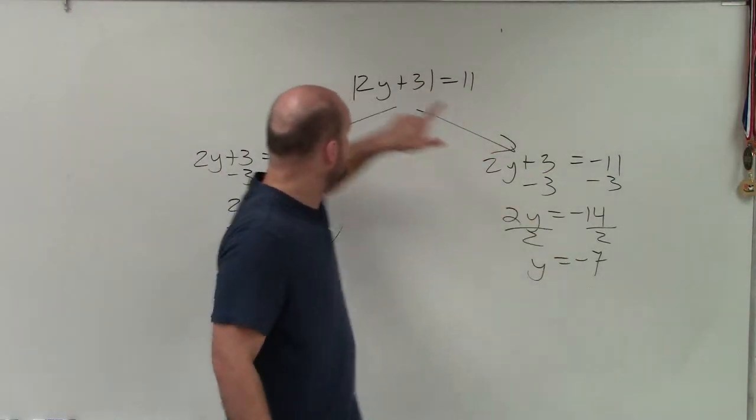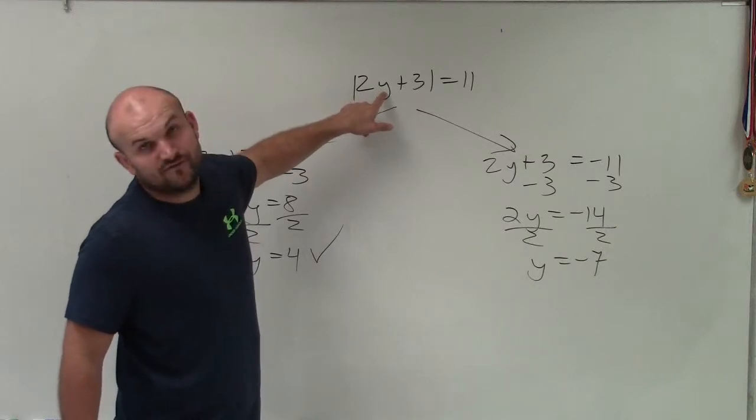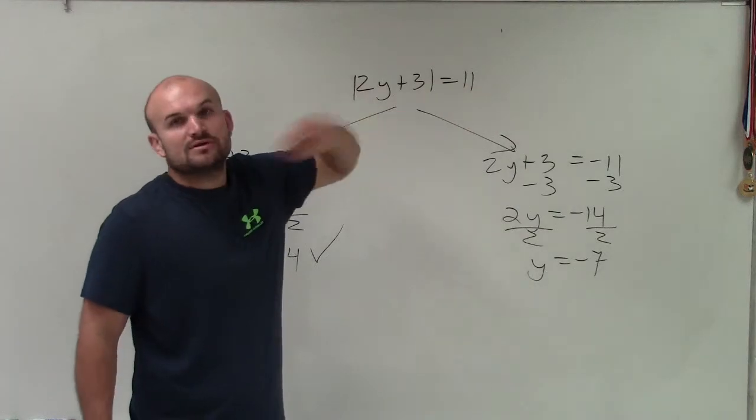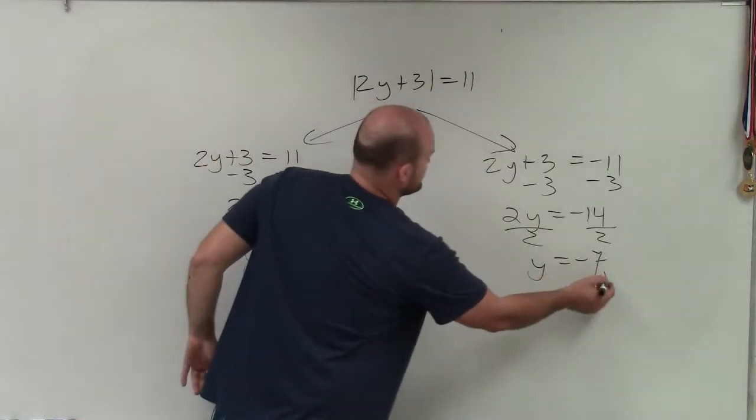Then I go with negative 7. 2 times negative 7 is negative 14. Plus 3 would be negative 11. Absolute value of negative 11 equals positive 11. So this is a solution as well.